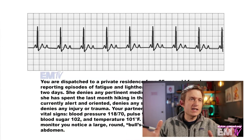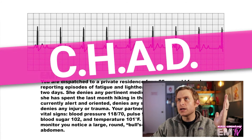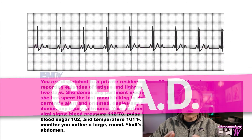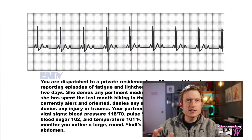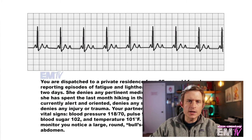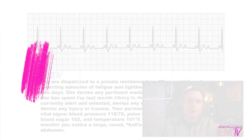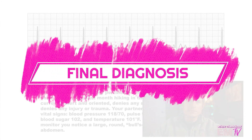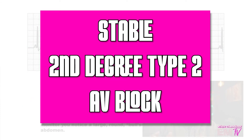When deciding if a patient is stable or unstable, I use the acronym CHAD. This stands for cardiac insufficiency, hypotension, alteration of mental status, and dyspnea. Based on my patient's signs and symptoms as well as her vital signs, she meets none of the criteria for CHAD. Because of this, my final diagnosis for Static Cardiology is going to be a stable second-degree type 2 AV block.